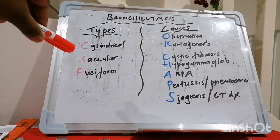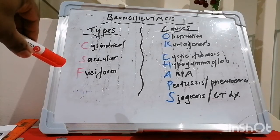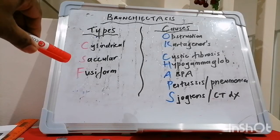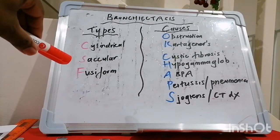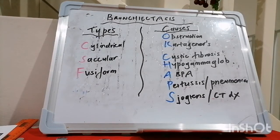The fusiform, also called the varicose form, has focal constrictive areas along the dilated airways. By and large, the causes can be remembered by the mnemonic OK CHAPS.